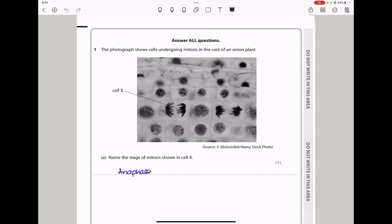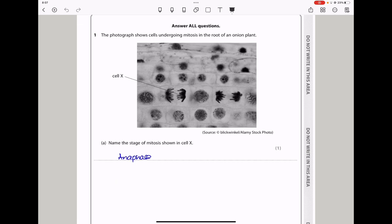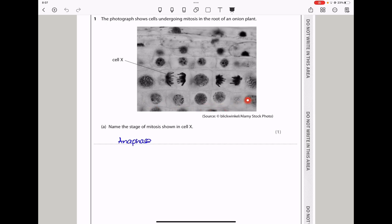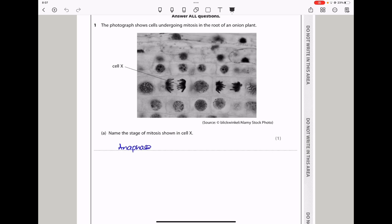Question 1. The photograph shows cells undergoing mitosis in the roots of an onion plant. We can see these are the cells going through mitosis, and they ask the stage of mitosis shown in cell X. We can see the chromosomes are moving away, so this is going to be anaphase.